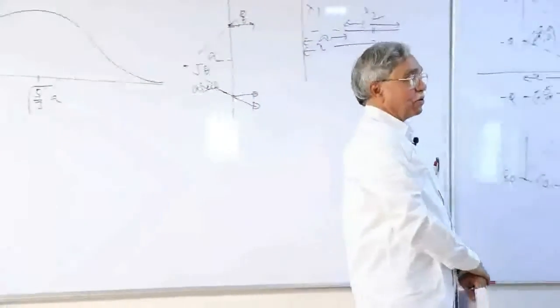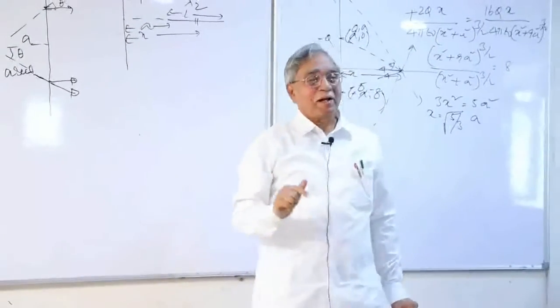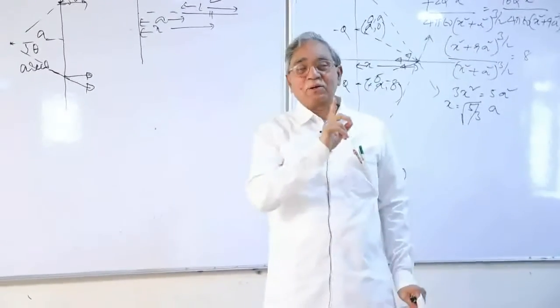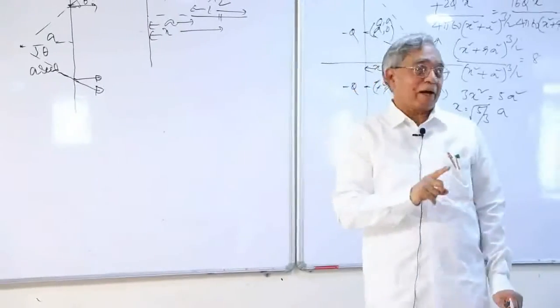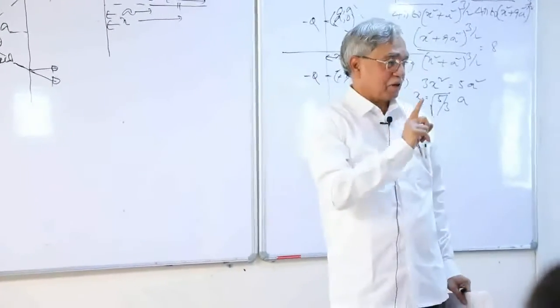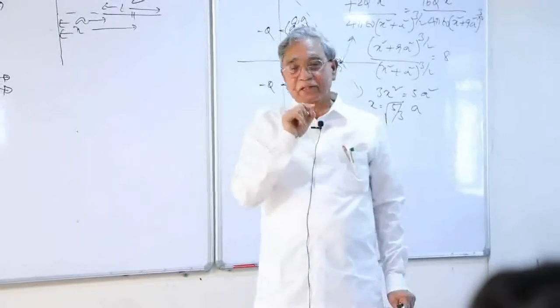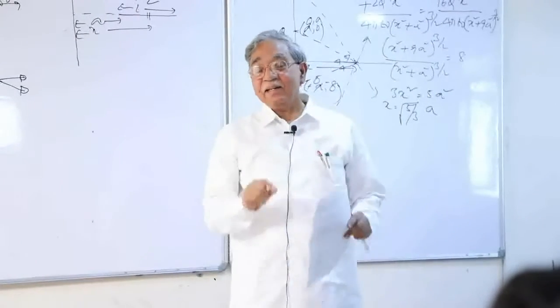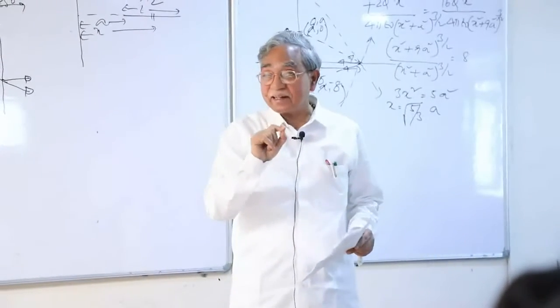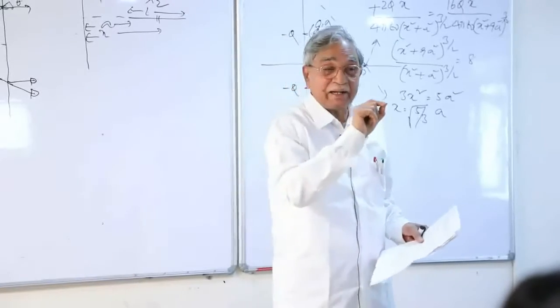So you should calculate potential at that point. Potential at infinity. Calculate potential difference. Multiply by the charge that you are projecting. Equate that with half m v squared. Then you can calculate the least velocity by which it can be observed later at origin.